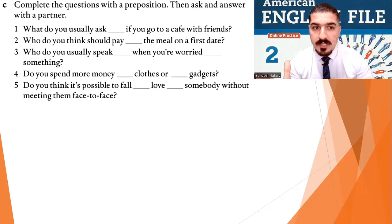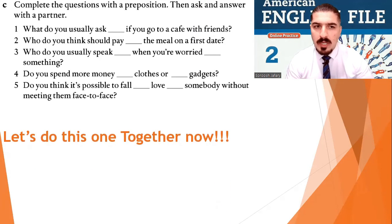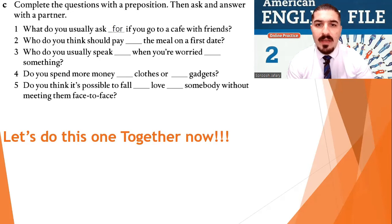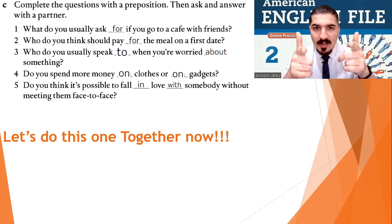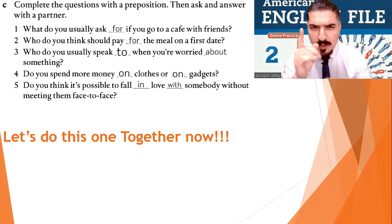Now that you know about the prepositions, let's test you again. Number one: what do you usually ask for if you go to a cafe with friends? Number two: who do you think should pay for the meal on the first date? Interesting question. Number three: who do you usually speak to when you're worried about something? Number four: do you spend more money on clothes or on gadgets? And number five: do you think it's possible to fall in love with somebody without meeting them face to face? Now I need you to ask these questions from your partner and answer them. Speak to your partner.